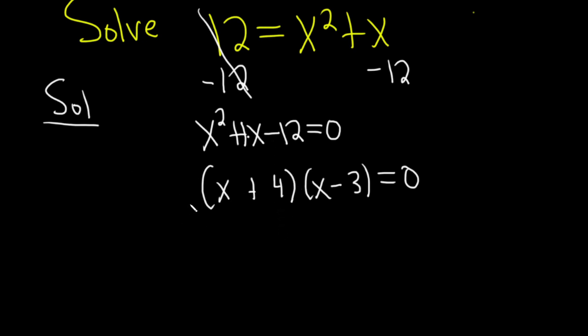Because we have a product and it's equal to 0, we can set each factor equal to 0. So x plus 4 equals 0, x minus 3 equals 0.